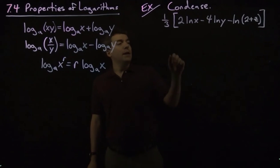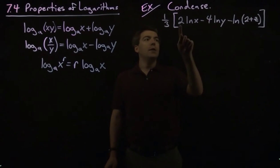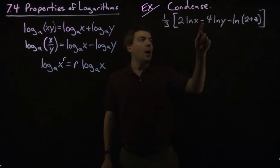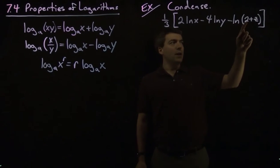All right, so this is one-third times the quantity 2 natural log of x minus 4 natural log of y minus the natural log of 2 plus z.